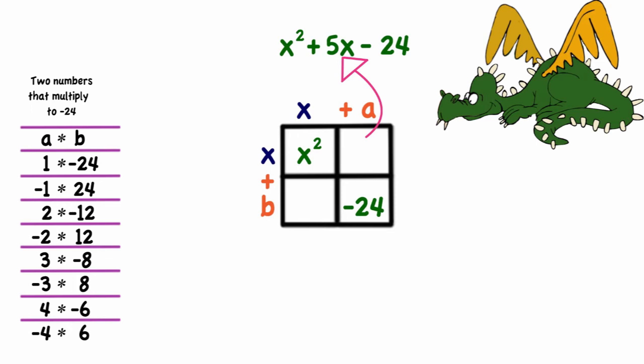If I continue to fill out my box I would have had ax and bx, but really I'm only interested in the coefficients. So the middle term's coefficient is found by adding a and b together. So in this case we know that a plus b needs to equal 5.